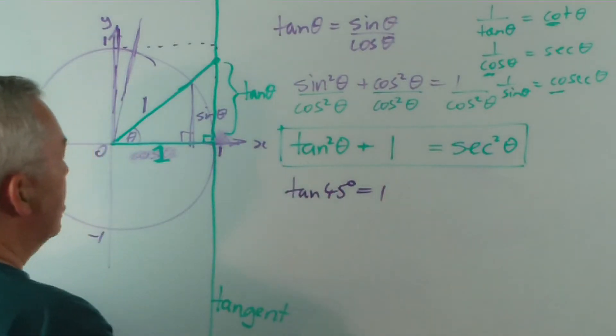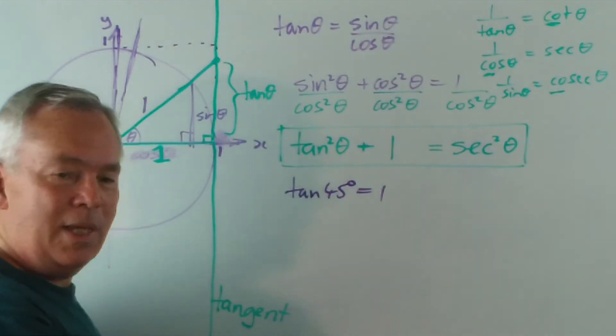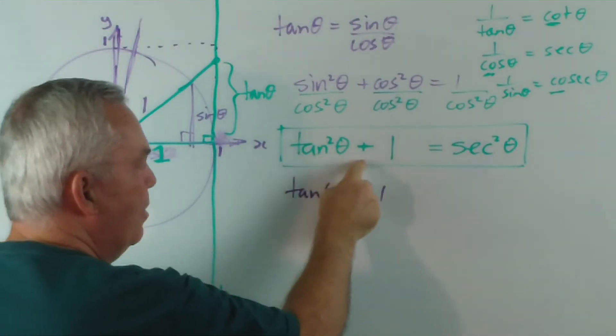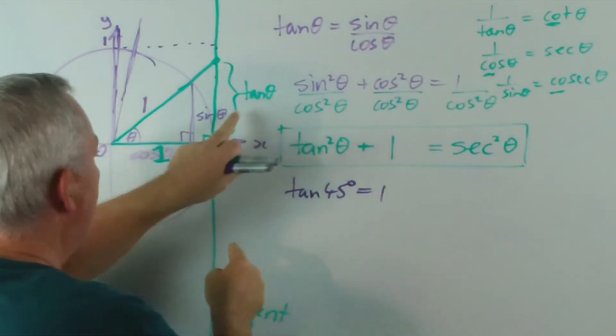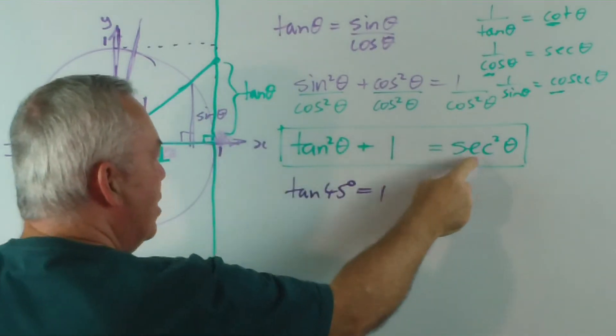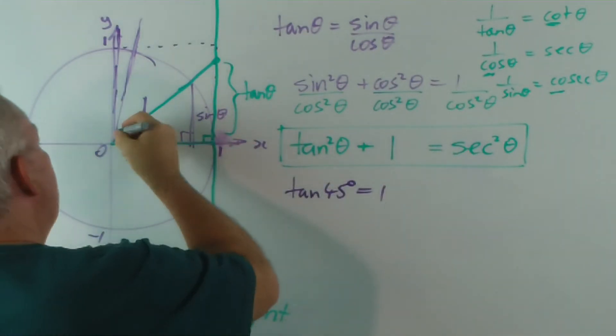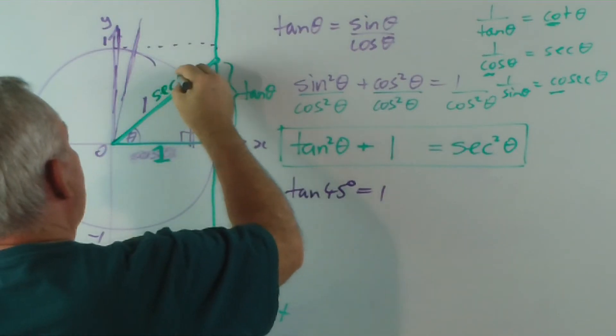That explains the tangent. So if that's tan theta, where do we find sec theta? Well, doesn't this look like Pythagoras' theorem again? a squared plus b squared equals c squared. Now, if tan theta and 1—tan theta and 1 are the two short sides of the triangle—then this must be the long side. So this length is sec theta.